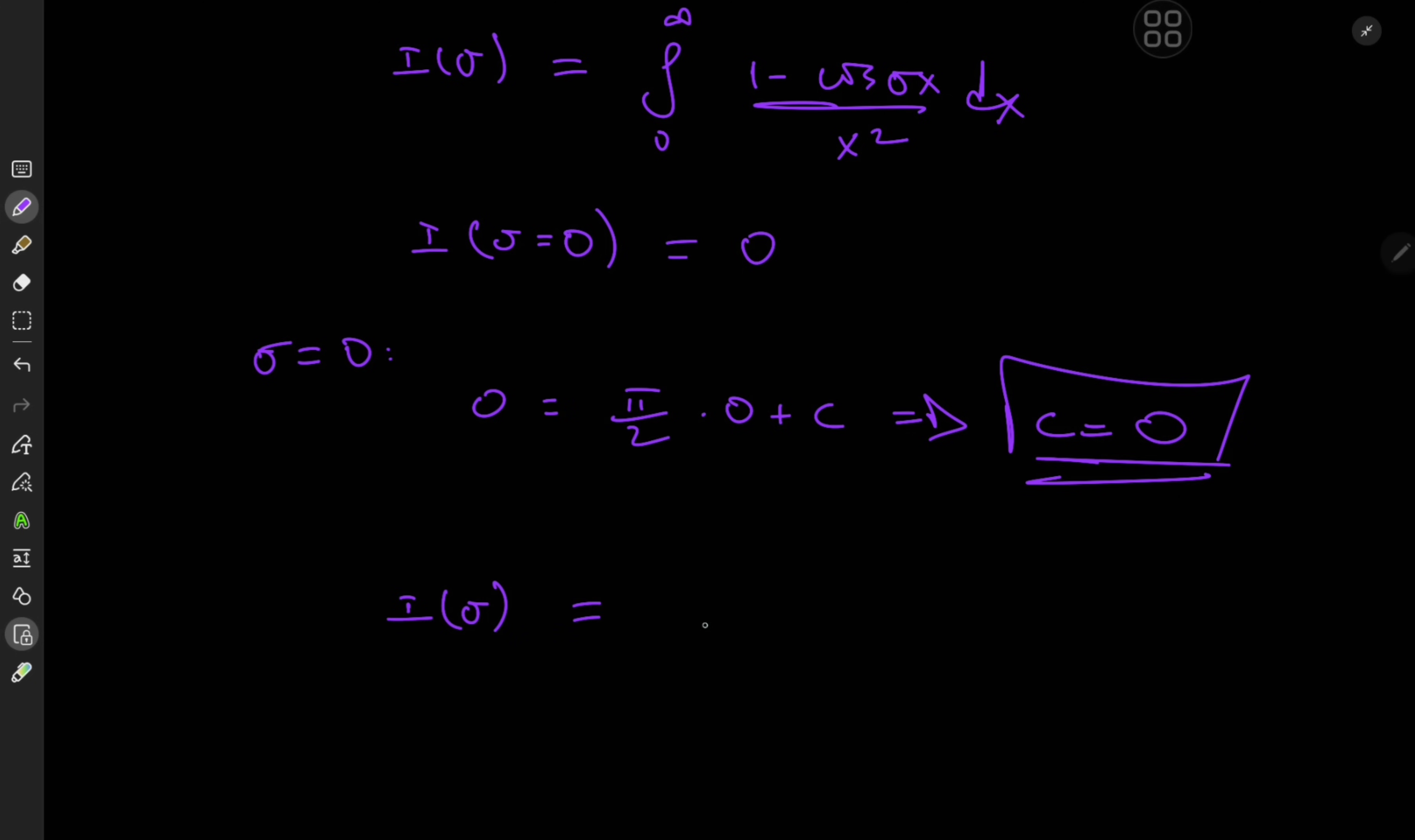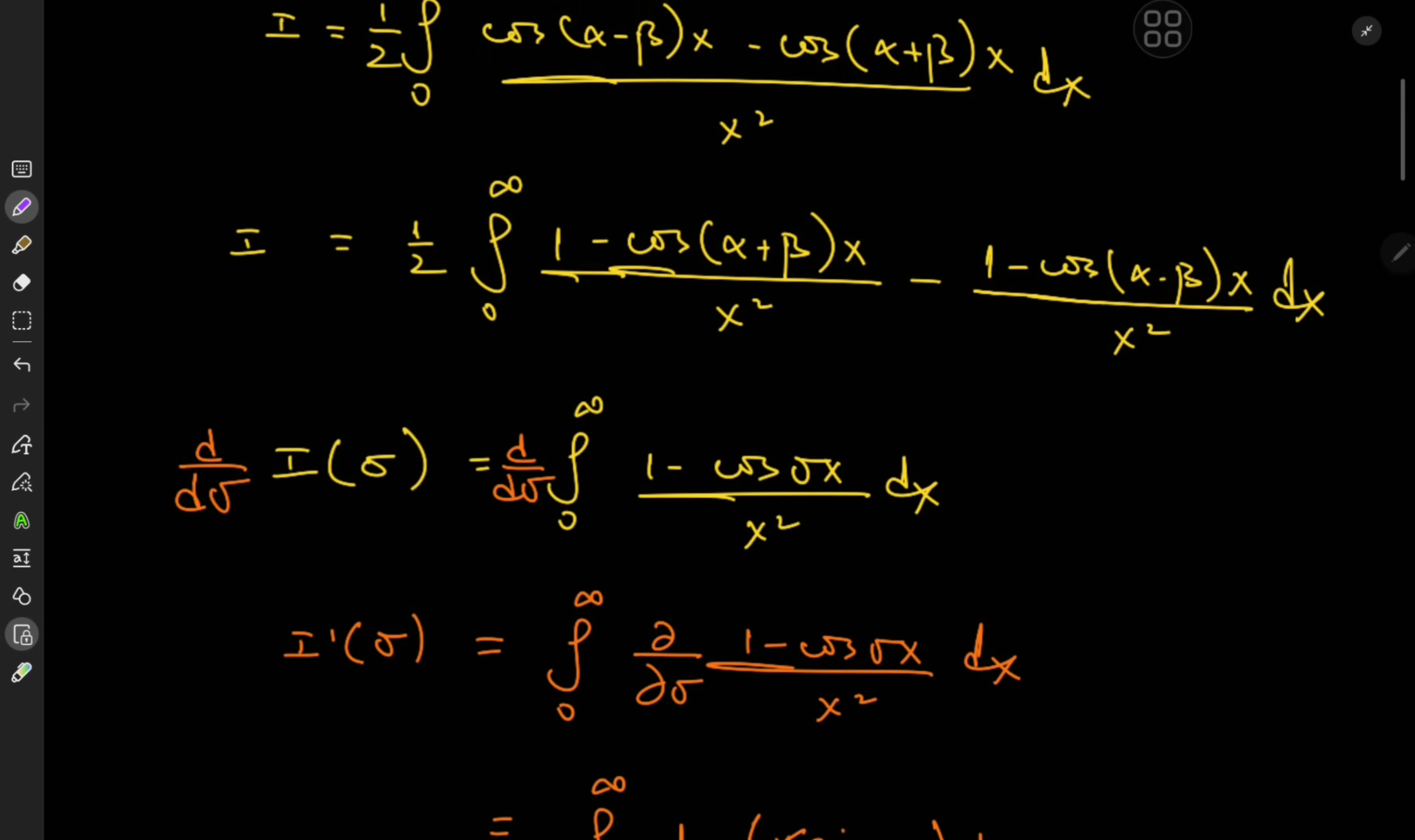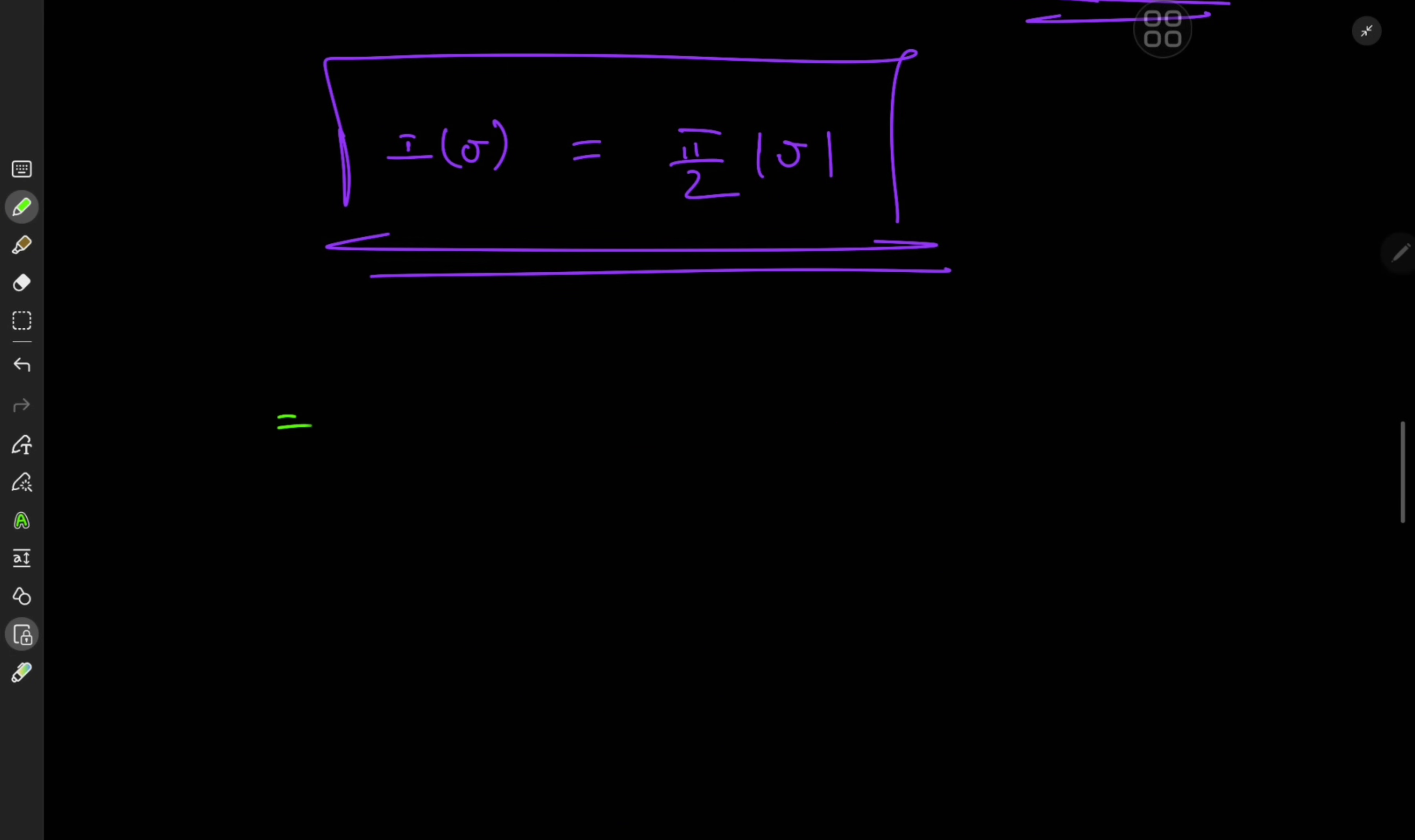So i of sigma is just pi over 2 times the absolute value of sigma and we have two cases of the parameter. We have one case being alpha plus beta and the other case being alpha minus beta. So all of this implies that the target integral i is one half times pi over 2 times absolute value alpha plus beta minus absolute value of alpha minus beta.